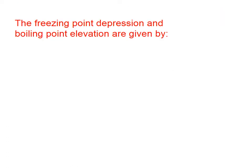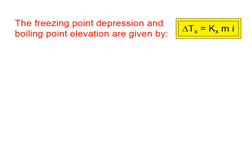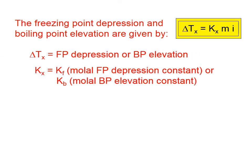The freezing point depression and boiling point elevation are given by the equation — which we'll use in a later lesson — that says the change in temperature ΔT is equal to a constant K times the molality times i, which is called the Van't Hoff factor. Delta T is the amount by which the freezing point decreases or the number of degrees by which the boiling point increases. K is a constant; for freezing point depression it's found in references as K_f, and for boiling point elevation as K_b.